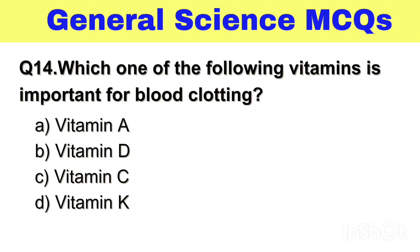Question No. 14. Which one of the following vitamins is important for blood clotting? Option A. Vitamin A, B. Vitamin D, C. Vitamin C, D. Vitamin K. The right answer, Option D. Vitamin K.